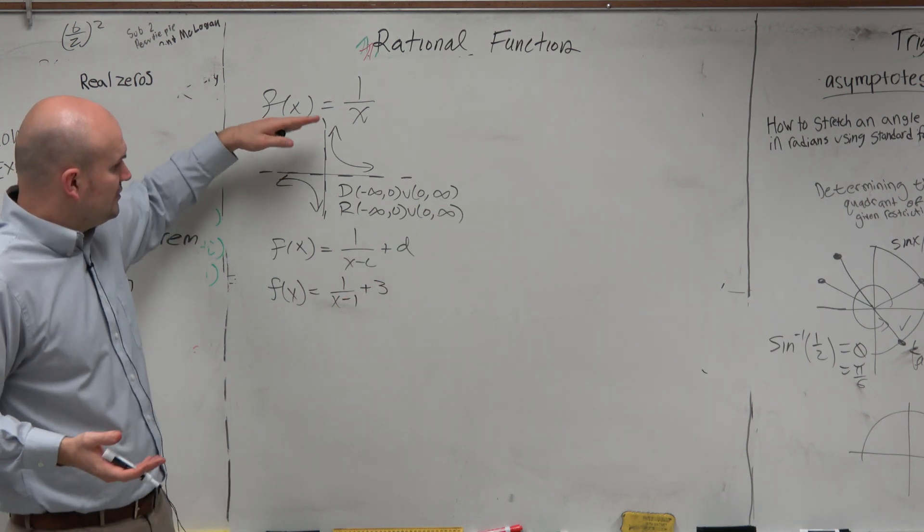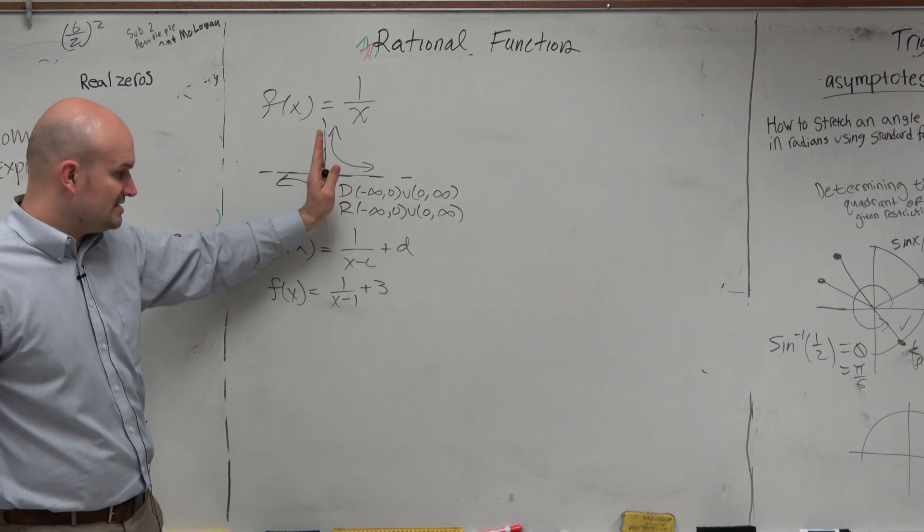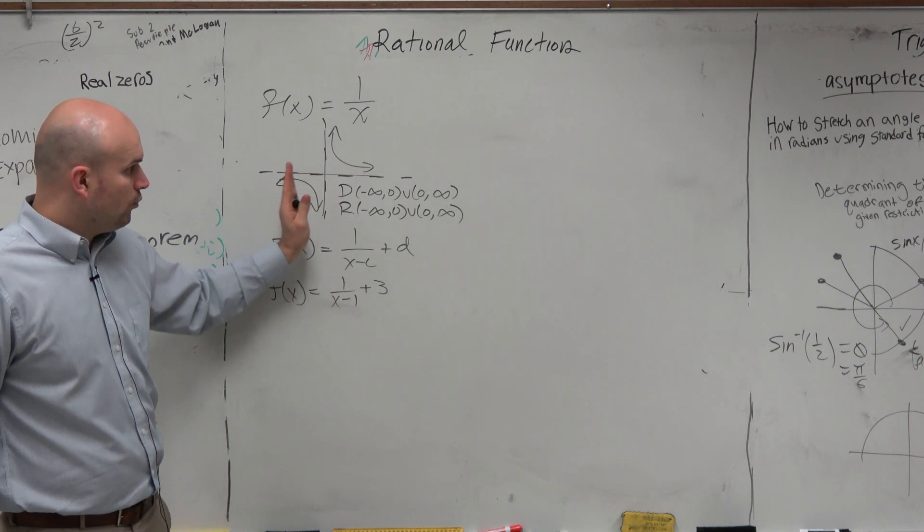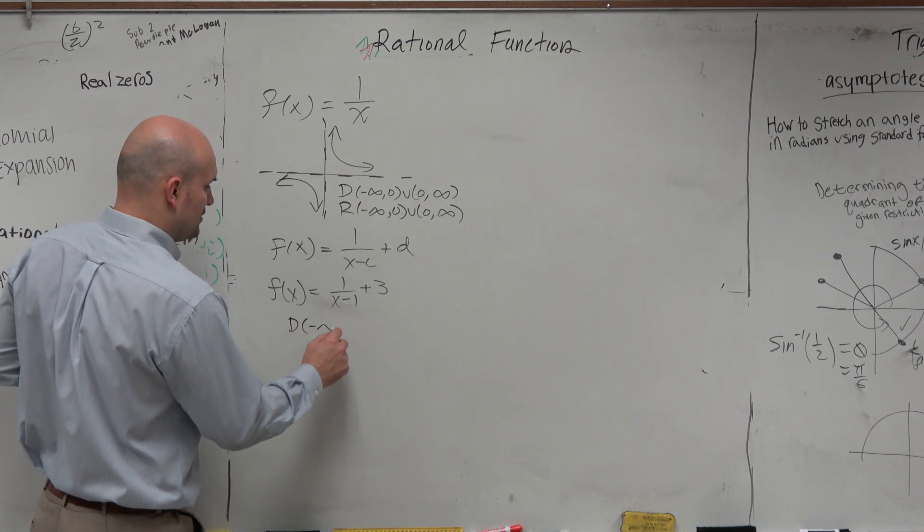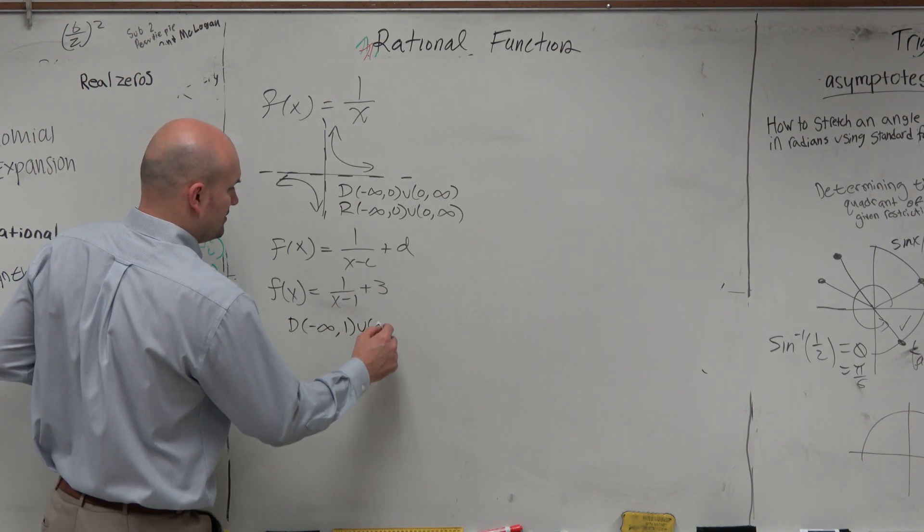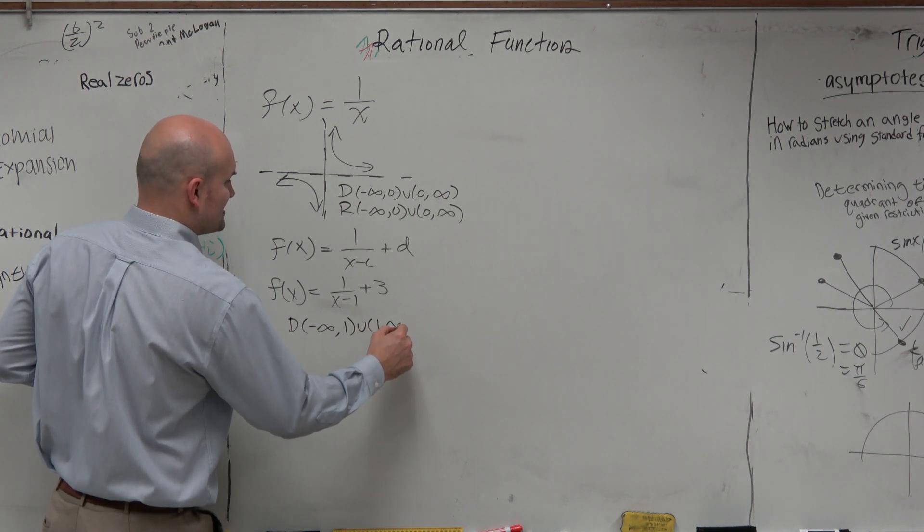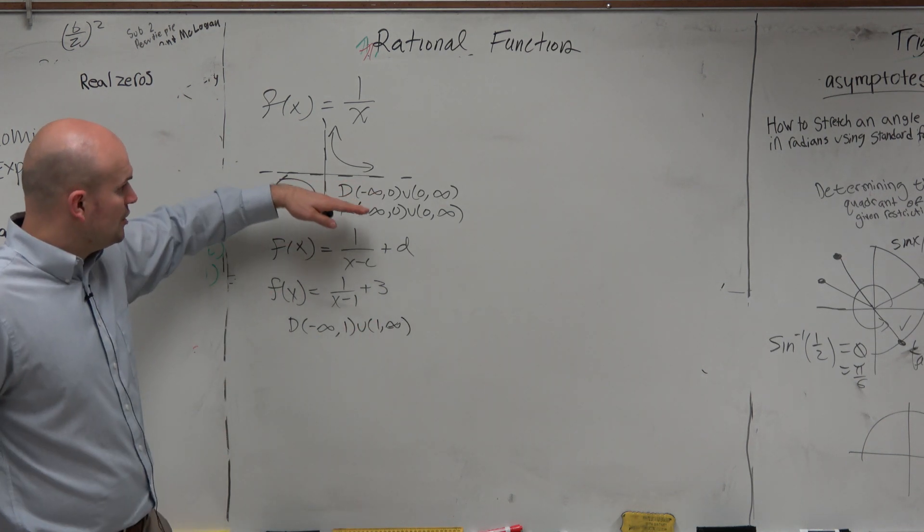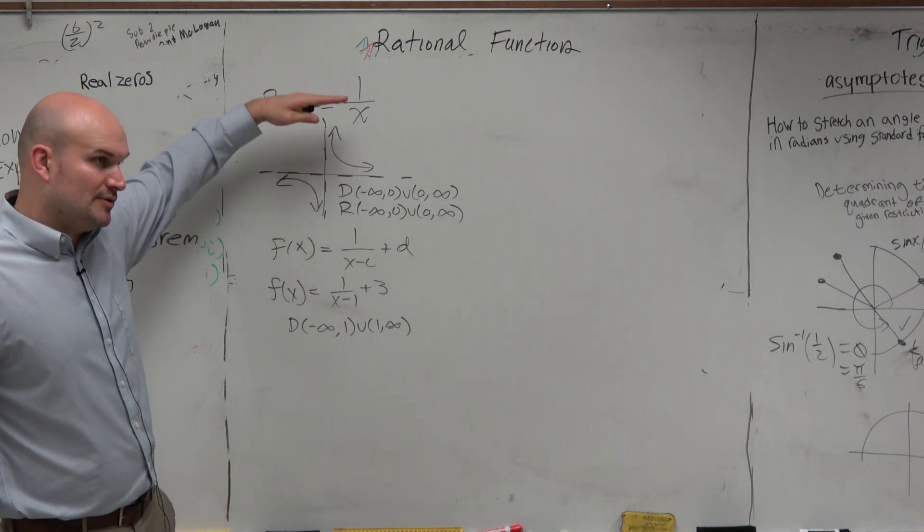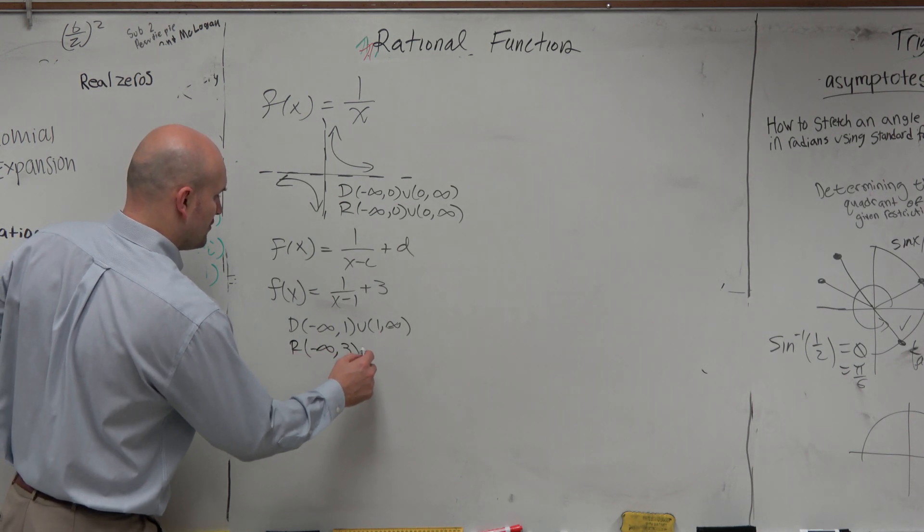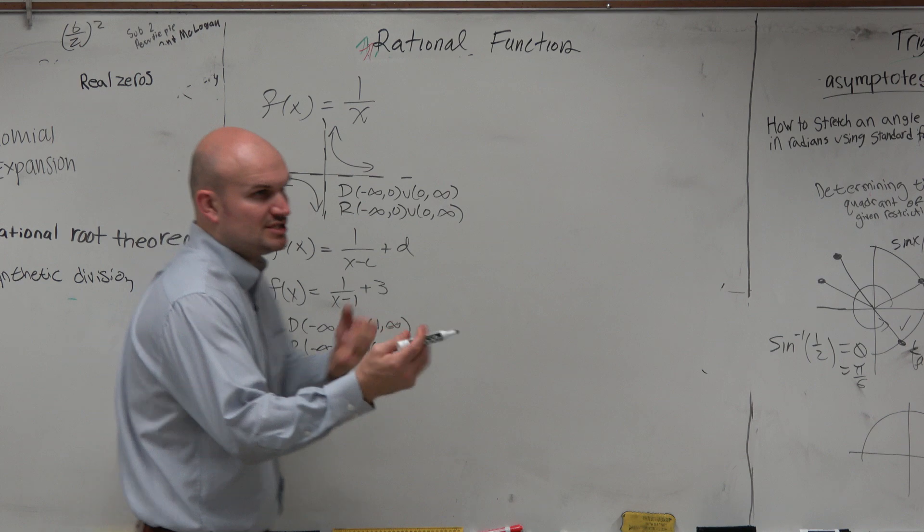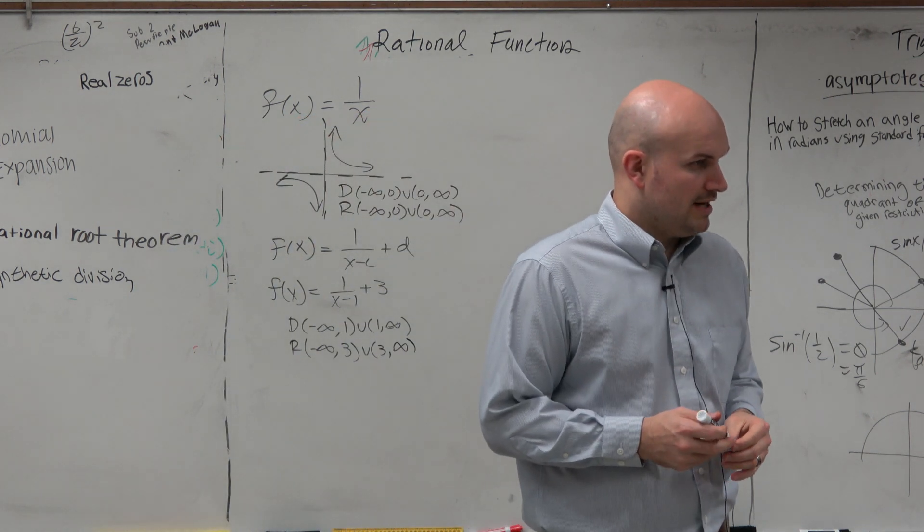So I could ask you, what is the domain and range of this function? Well, if originally the graph had a horizontal asymptote at 0 and it gets shifted right one unit, my domain is now all real numbers except for 1. And if my graph has a horizontal asymptote at 0, but it gets shifted up 3, now my range is all real numbers except for 3. So you guys see how these transformations affect the domain and range, right?